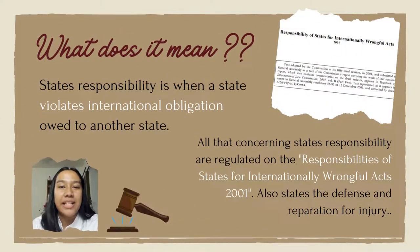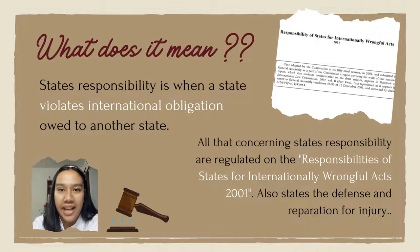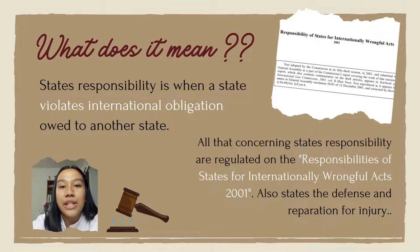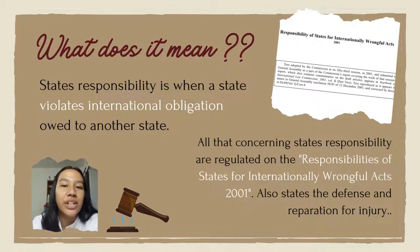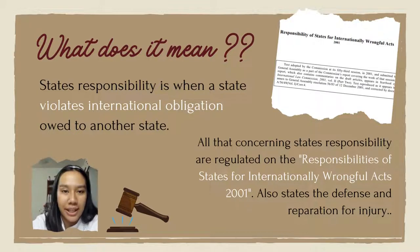State's Responsibility is when a state violates an international obligation owed to another state. It may occur when a state abuses the nationals of another state or acts opposed to a legally binding decision of a competent international organization such as the Security Council.